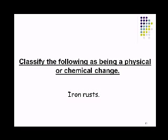Finally, iron rusting: iron usually has a grayish color, but when it rusts it turns into an ugly reddish orange. Color change is a clue that a chemical reaction has occurred, so iron rusting is a chemical change.